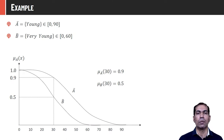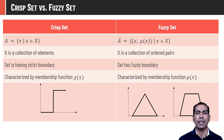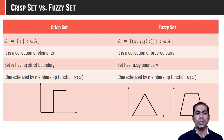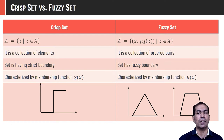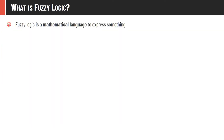Differences between crisp set and fuzzy set: Crisp set is a collection of elements x ∈ X; fuzzy set is a collection of ordered pairs (x, μ_Ā(x)). Crisp set has a strict boundary; fuzzy set has a fuzzy boundary. Crisp sets are characterized by characteristic function χ (binary: 0 or 1); fuzzy sets are characterized by membership function μ (any value 0 to 1). Membership in crisp sets is assigned by a step function; in fuzzy sets, by various functions — triangular, trapezoidal, Gaussian, sigmoid, or others.